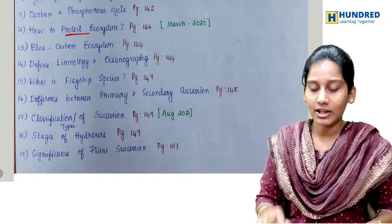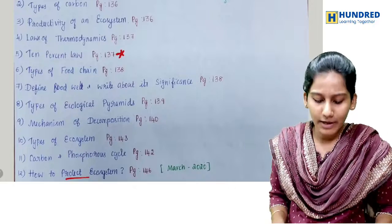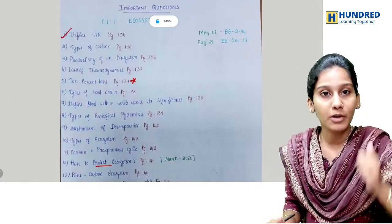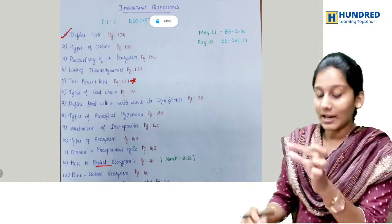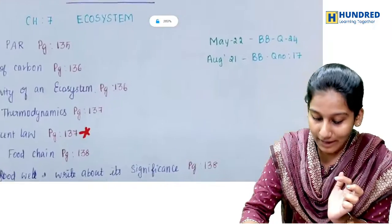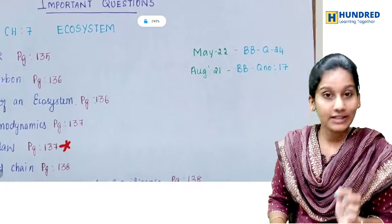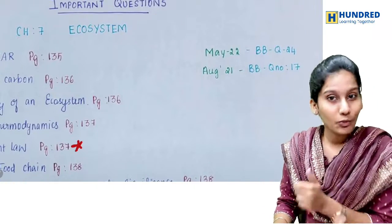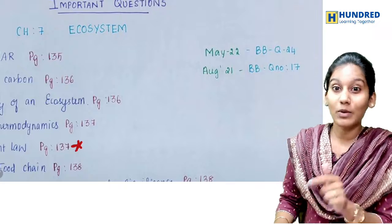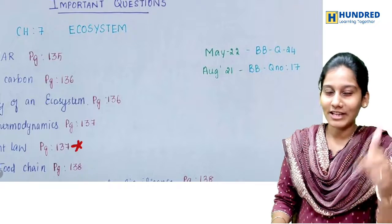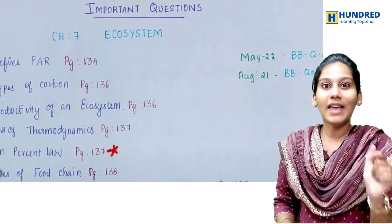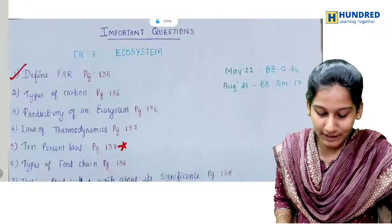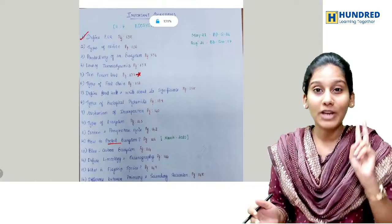Types of succession is a very important question, along with hydrosere and the significance of plant succession. You can check the set of questions in the PDF. Side book back questions are also attached. For 2022 public question number 24, you can check it. PAR full form — comment below.